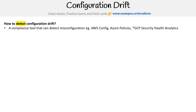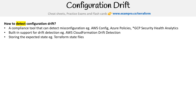Some of these are constrained to security things, not just general configuration, but there are tools available for all the cloud service providers. There is also built-in support for drift detection — for AWS that's called CloudFormation Drift Detection. Other providers don't necessarily have that. If you're using Terraform, which is what this course is about, you have the Terraform state files, which describe what the state of things should be — that's how you can detect configuration drift.